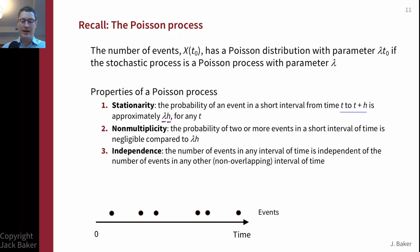Looking at the top line of text: if we count the number of events in some interval of time t0, that number of events x is going to be a random variable with a Poisson distribution. We specify the parameter as lambda — the rate of events per unit time — times t0, the amount of time that's passed. We can then use a Poisson distribution to count the number of events.